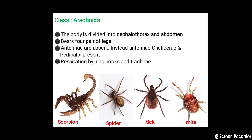The next class, Arachnida: the body is divided into two parts — cephalothorax (fusion of head and thorax) and abdomen. They have four pairs of legs; antennae are absent. Instead of antennae, chelicerae and pedipalpi are present. Respiration takes place using book lungs and trachea. Examples: scorpion, spider, ticks, and mites.